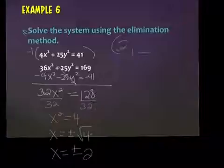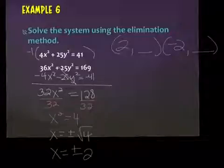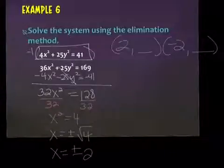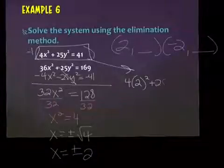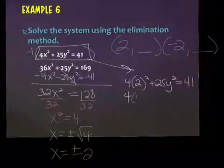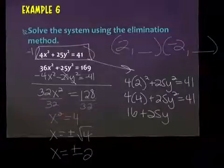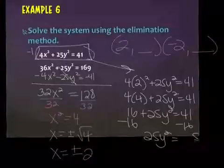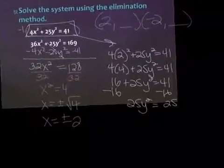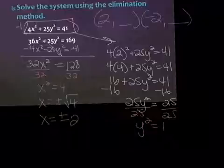So my two x values are going to be positive 2 and negative 2. Now I'm going to take each of those and plug them back in one at a time. I'll grab the first equation because it has smaller numbers — you can plug back into either one. 4 times 2 squared plus 25y squared equals 41. 4 times 4 is 16.